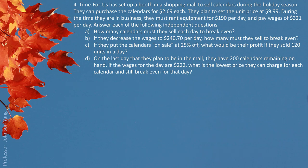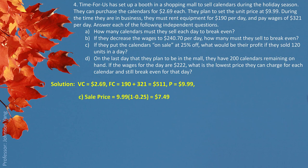Part C: if they put the calendars on sale at 25% off, what would be their profit if they sold 120 units in a day? We keep the same variable cost per unit and the original fixed cost of $511. A 25% discount means the sale price is 75% of the original price, giving $7.49. Profit equals total revenue minus total fixed cost minus total variable cost, giving us $65.